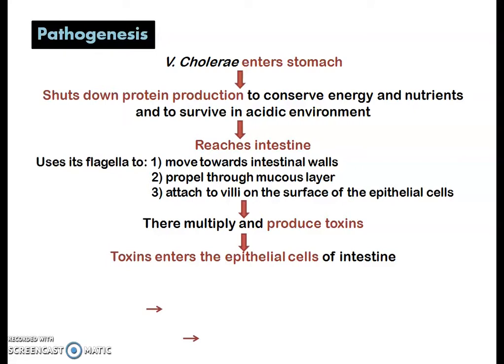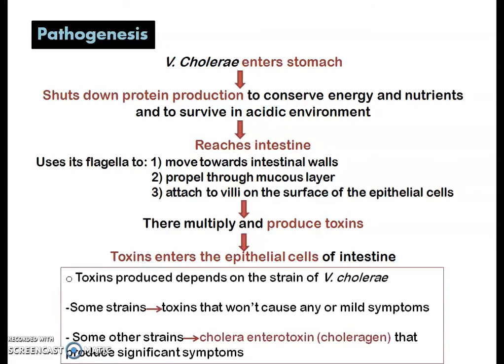These toxins enter the epithelial cells of the intestine, but not Vibrio cholerae itself — the bacterium does not enter the intestinal epithelial cells, only the toxins it produces do. The toxins produced depend on the strain of Vibrio cholerae; some strains produce toxins that cause no or only mild symptoms.